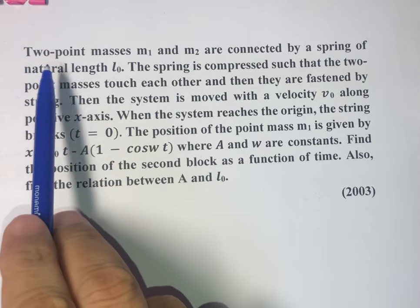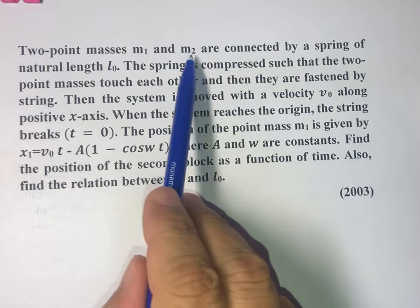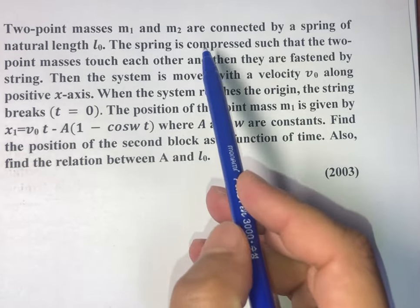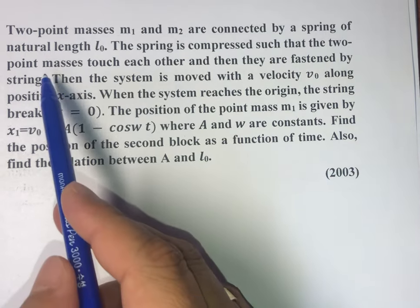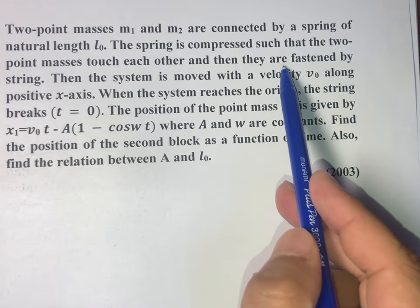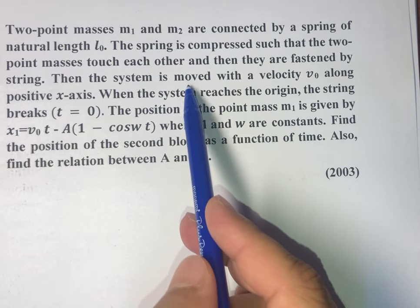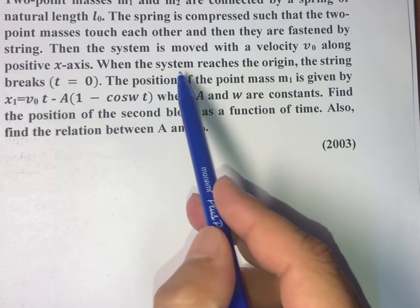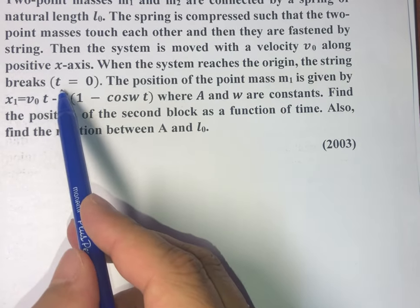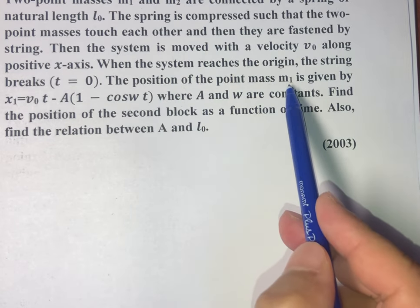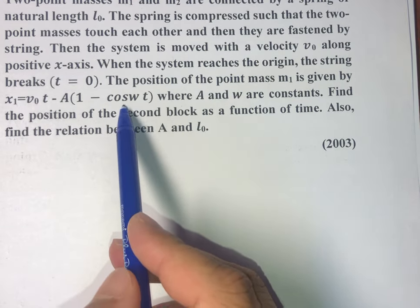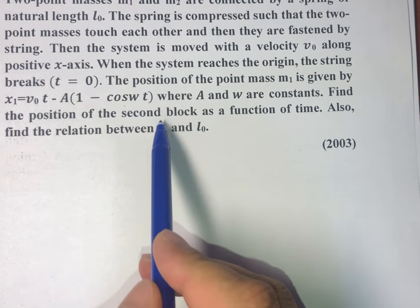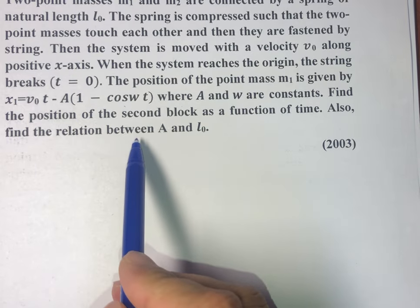Today's question: two point masses m1 and m2 are connected by a spring of natural length l0. The spring is compressed such that the two point masses touch each other, and then they are fastened by a string. The system is moved with velocity v0 along the positive x-axis. When the system reaches the origin the string breaks, that is at t equals zero. The position of mass m1 is given by x1 = v0·t - A(1 - cos ωt), where A and ω are constants. Find the position of the second block as a function of time, and also find the relation between A and l0.